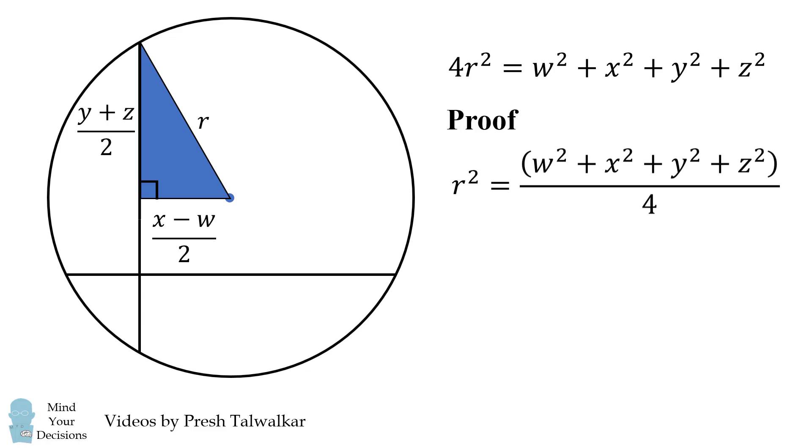So we then get that r squared is equal to the sum of these squares all over 4. All we need to do is multiply by 4 and we get the formula, and that concludes the proof.